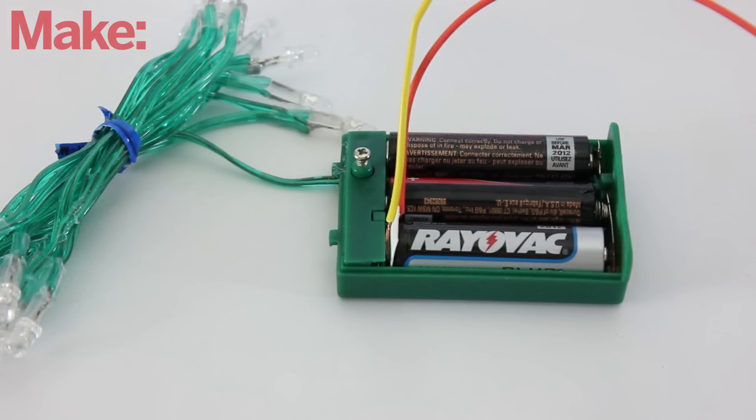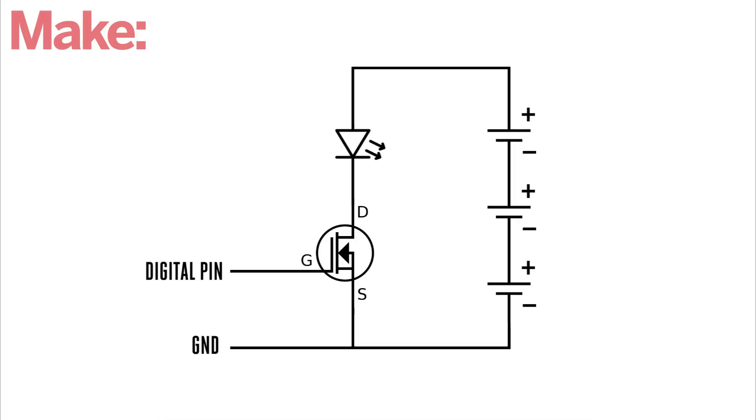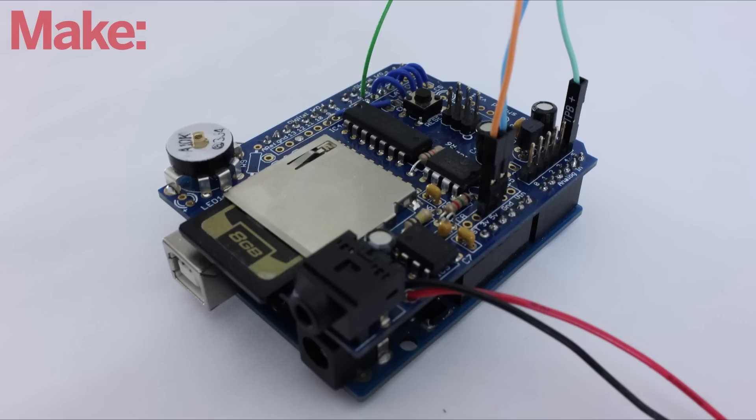The spring wire is connected to the drain pin of a power MOSFET, and the negative battery wire is connected to the source pin. The MOSFET is then connected to ground and digital pin 6 on the Arduino. This lets the Arduino control the lights.